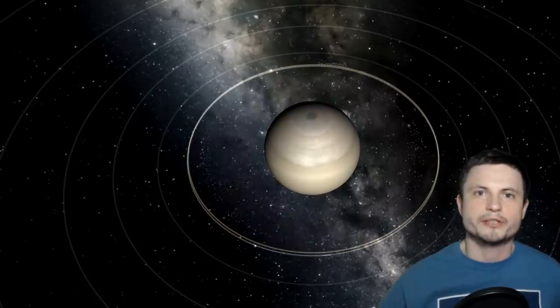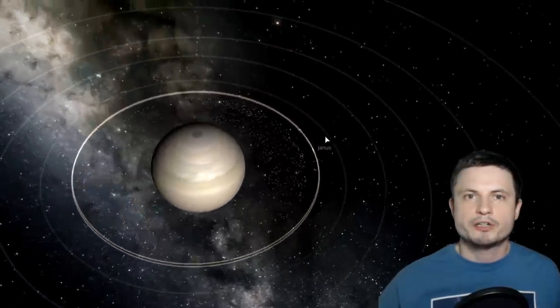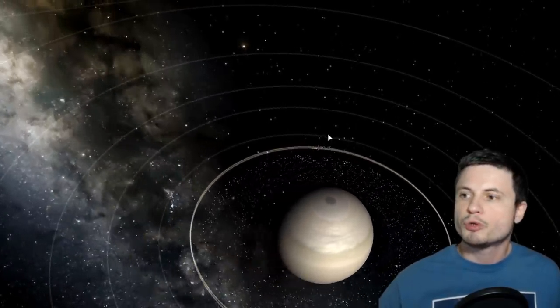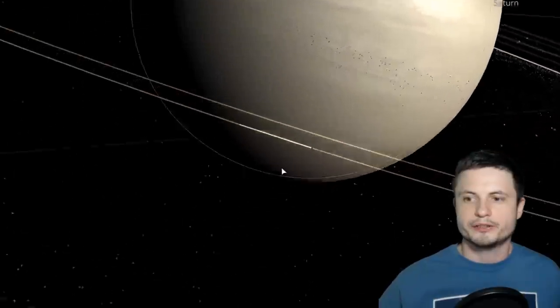And then we come into the 20th century. This is where all of the other discoveries happened. And the first discovery was in 1966, and this was an astronomer known as Audouin Dollfus. I had to read his name, his name is pretty complicated. He discovered this moon right here. This is known as Janus.